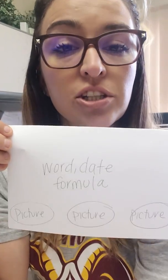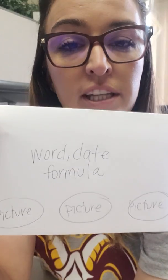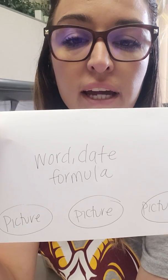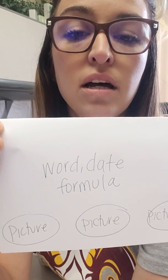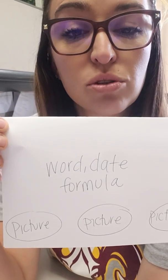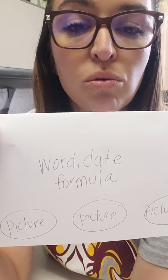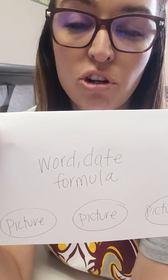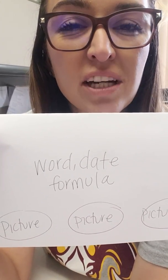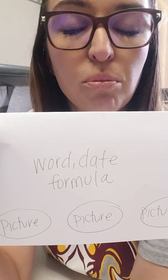I've made this giant flashcard on printer paper so you get the picture. On the front side you have the word, date, or formula, and on the bottom I put a space for a picture — I circled it. Since most of us are visual learners, I encourage you to write down the word, date, or formula and draw a picture of it — some kind of visual cue to help you remember the information.